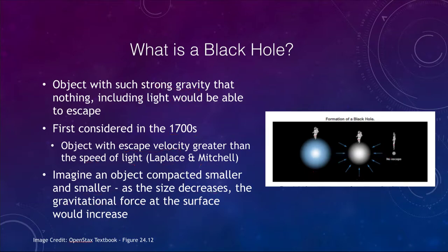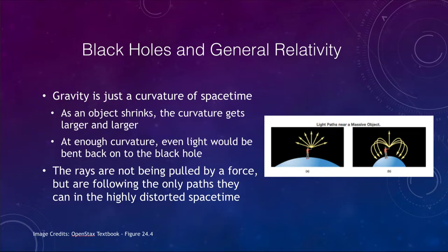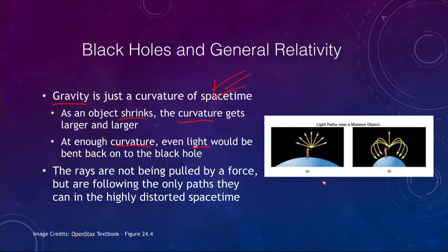In terms of black holes and looking at them with general relativity — remember general relativity describes gravity as a curving of space-time — as the object shrinks, this curvature gets larger and larger. If the curvature is large enough, then even light would be bent back in on the black hole. As we can see in our image here, at an ordinary object, if we shine a flashlight out, all of the rays are able to escape — they are traveling at greater than the escape velocity.